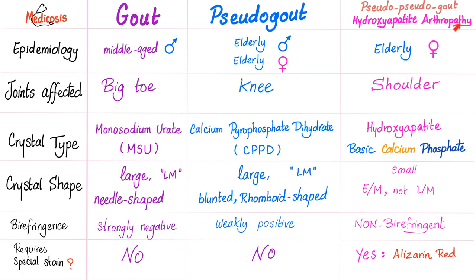Crystal type: monosodium urate in gout, calcium pyrophosphate dihydrate in pseudogout, and basic calcium phosphate in hydroxyapatite arthropathy. Crystal shape: large in gout, large in pseudogout, and very small in hydroxyapatite arthropathy — that's why you'll miss it using light microscopy. You need electron microscopy or a special stain. The monosodium urate crystals are large and visible by light microscopy.